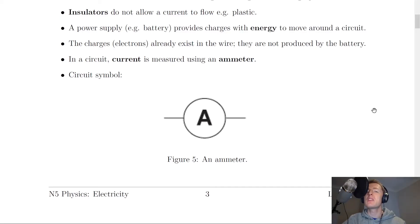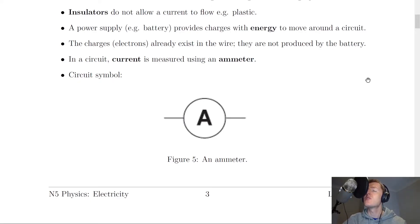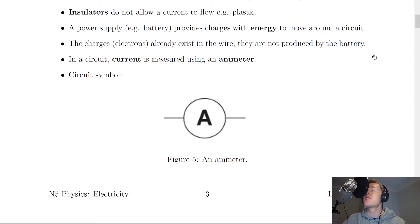A common misconception is that batteries produce electrons which flow in the circuit. That is definitely not the case. Atoms have electrons in them, and it's these electrons that flow in the wires. Because wires are made up of atoms, it's the electrons within those atoms that can be made to move — but they need to be given enough energy to do so by the battery. The charges already exist in the wire; they are not produced by the battery. They're there to begin with, but given a kick to move when the battery is connected.